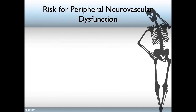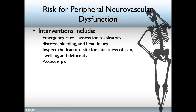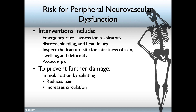These complications put the patient at risk for peripheral neurovascular dysfunction. Interventions should include emergency care: assess for respiratory distress, altered mental status, any bleeding, and head injury from falls. Inspect the fracture site for skin intactness, looking for swelling and deformities. Assess for the six P's, and immobilize by splinting, which can reduce pain and promote circulation.